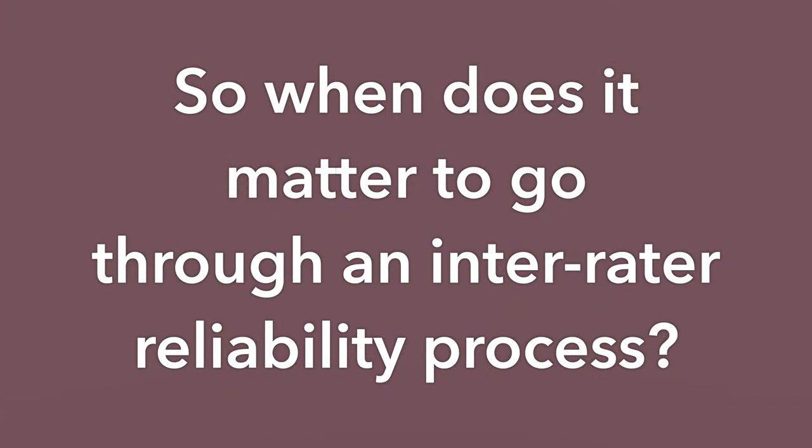Depending on your methodology and quality of research, subjectivity might be desired. So in ethnography, for instance — and I'm not an ethnographer — I understand from ethnographers that subjectivity is desired. You know your data, and so of course you're going to see it in a particular way. So when does it matter to go through an inter-rater reliability process?